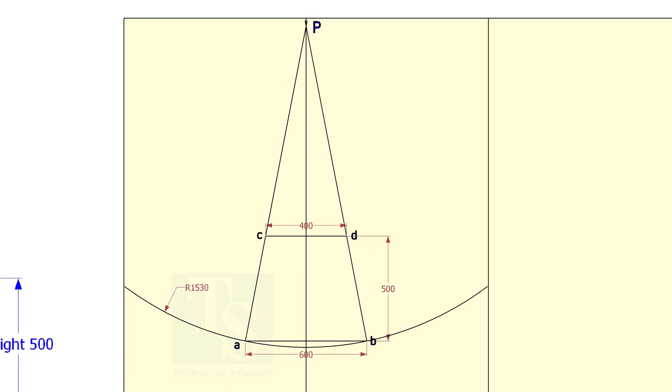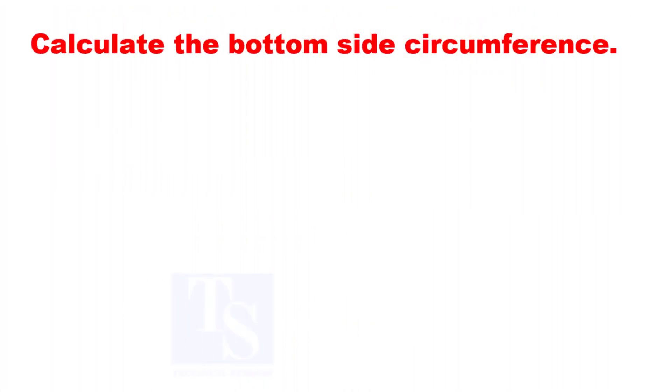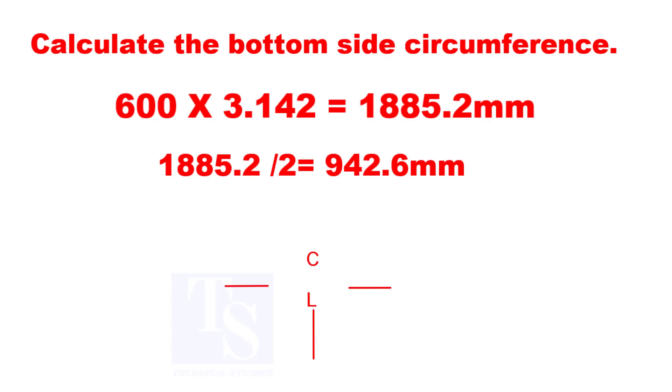Draw the arc PC. Let us calculate the bottom side mean diameter circumference and divide the circumference by two and mark the length on both sides. If required, you can mark the full length to one side.